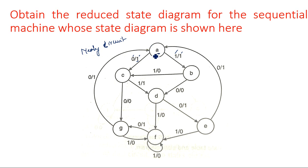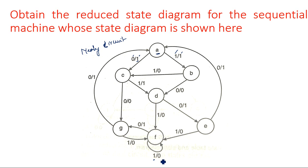In the Mealy model, the output depends on two things: the present state of the flip-flop and the present input. So, at A when input equal to 1, output equal to 1 and it goes to B; when input equal to 0, output equal to 1 and it goes to C. At B, output equal to 0 when input equal to 0 and it goes to D; when input equal to 1, it goes to state C and output equal to 0. We can explain the full state diagram this way, following the arrow marks.